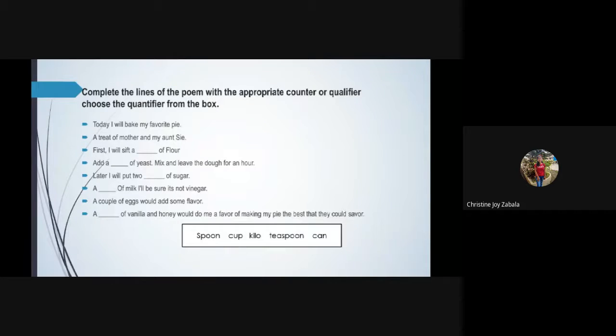Who wants to answer question number five? Okay, very good. A teaspoon of vanilla and honey would do me a favor of making my pie the best that they could taste. Who got the perfect score? Very good class, all of you got the perfect score. Give yourself a round of applause.